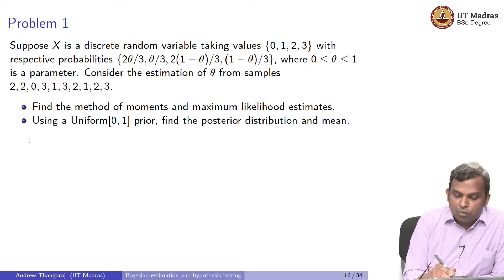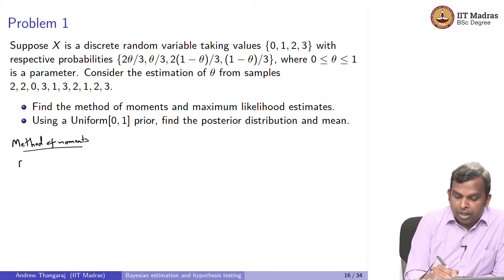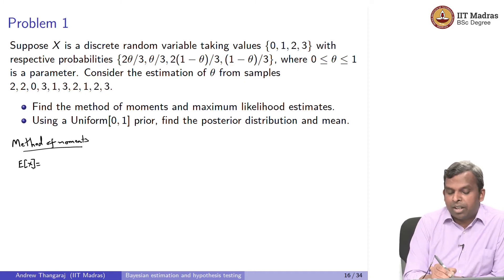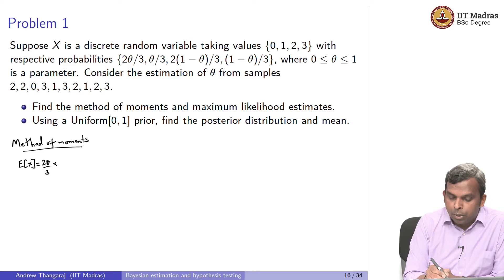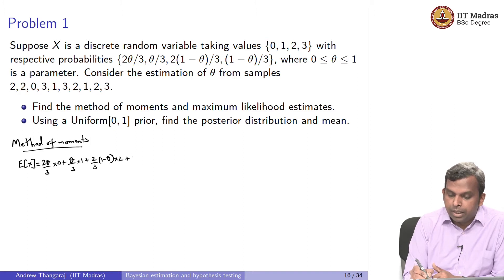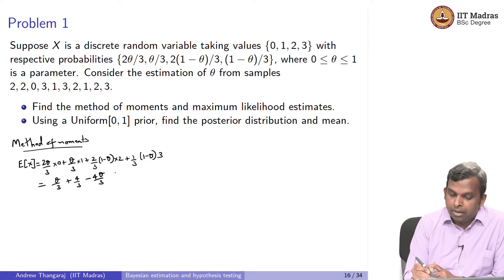Let us start with method of moments. Method of moments involves equating the expected value of X to the sample moment and solving. So first we find E[X], which is P(X=0)·0 + P(X=1)·1 + P(X=2)·2 + P(X=3)·3. Simplifying this gives a constant term of 7/3 plus a theta-dependent part. The constant terms combine to 7/3 and the theta terms give minus 2·theta, so E[X] = 7/3 − 2·theta.